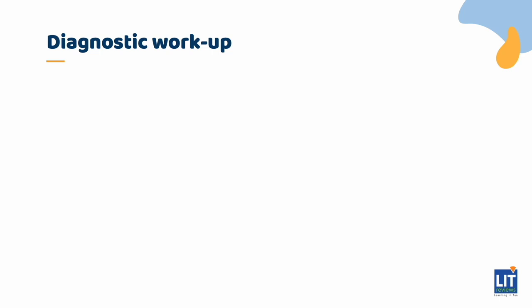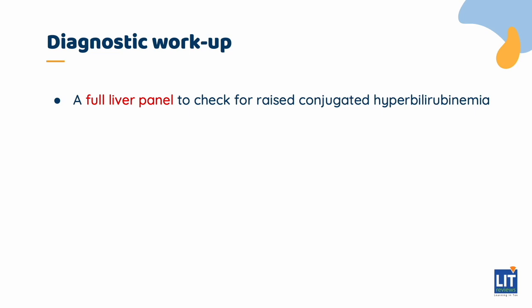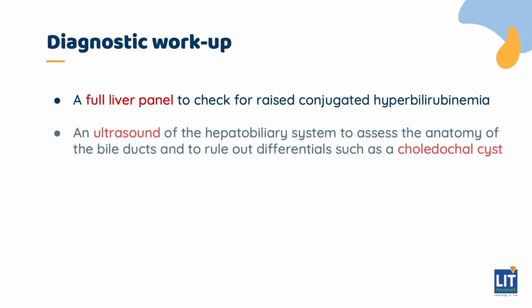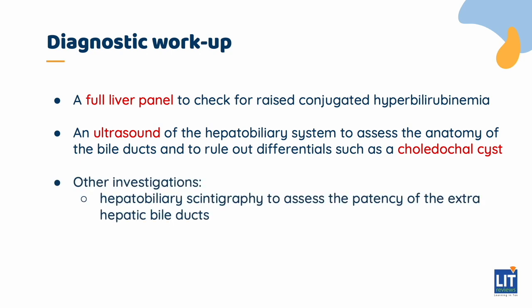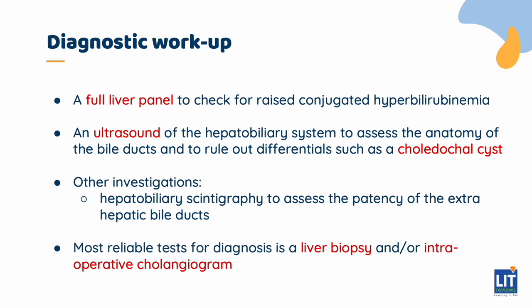When investigating a child with suspected biliary atresia, a full liver panel should be ordered to check for raised conjugated hyperbilirubinemia, which confirms cholestatic jaundice. In terms of imaging, an ultrasound of the hepatobiliary system can be done to assess the anatomy of the bile ducts and to rule out differentials such as choledochal cyst. Other investigations include hepatobiliary scintigraphy to assess the patency of the extra-hepatic bile ducts. The gold standard and most reliable tests for diagnosis are liver biopsy and/or intraoperative cholangiogram.